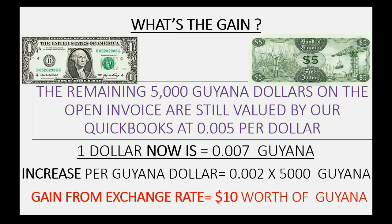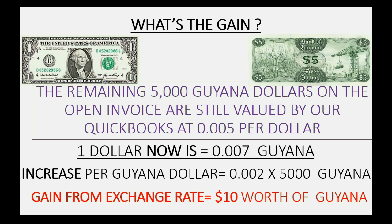After receiving payment on February 15th, Accounts Receivable Guyana should go down to zero. Five thousand units times $0.007 means we received $35 US dollars into our Guyana bank account, making the balance of the Bank of Guyana $65. The difference between the $35 received and the $25 remaining on the invoice is a $10 gain, so the net exchange gain will increase by $10 and become $11.30. These will be the numbers after receiving the February 15th payment.